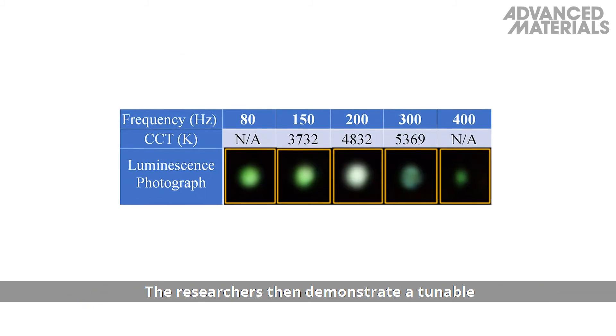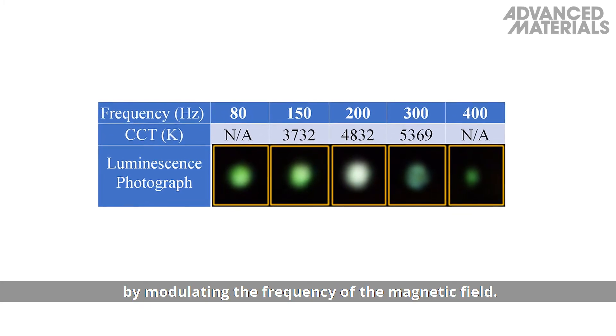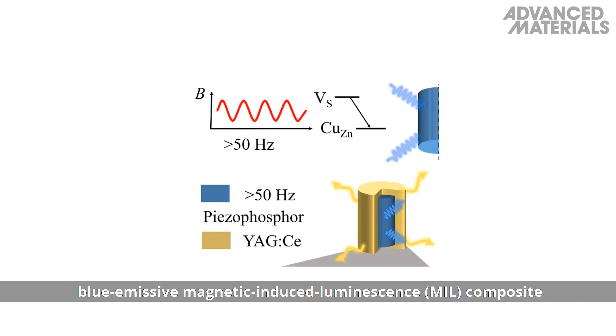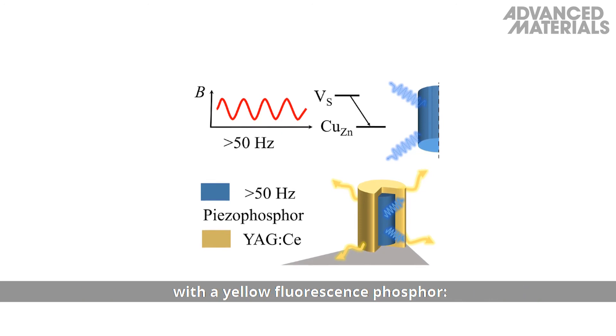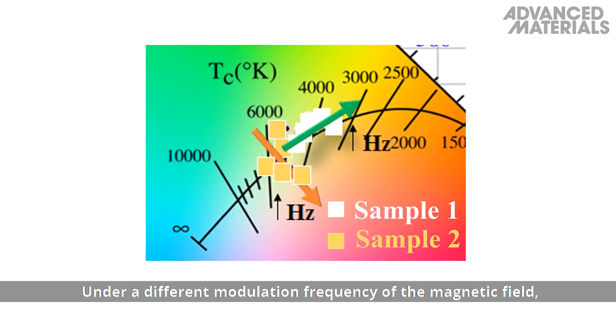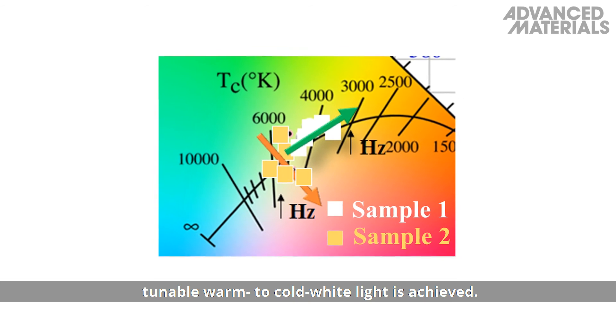The researchers then demonstrate a tunable white light and multicolored display by modulating the frequency of the magnetic field. White light emission is achieved by combining a blue-emissive magnetic-induced luminescence (MIL) composite with a yellow fluorescence phosphor, cerium-doped yttrium aluminum garnet. Under a different modulation frequency of the magnetic field, tunable warm to cold white light is achieved.